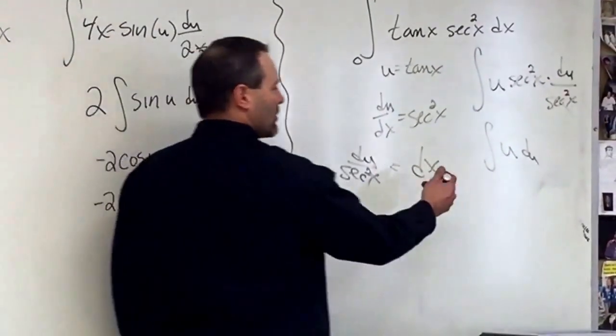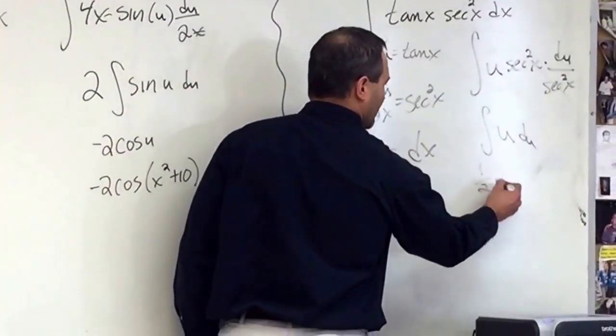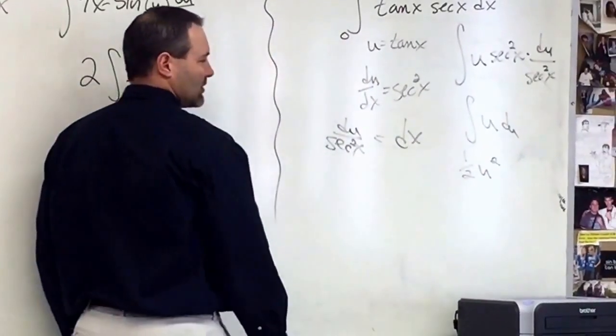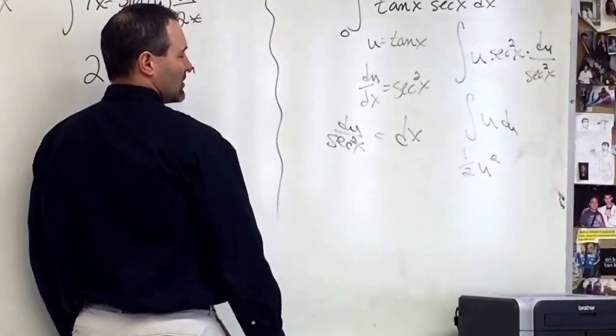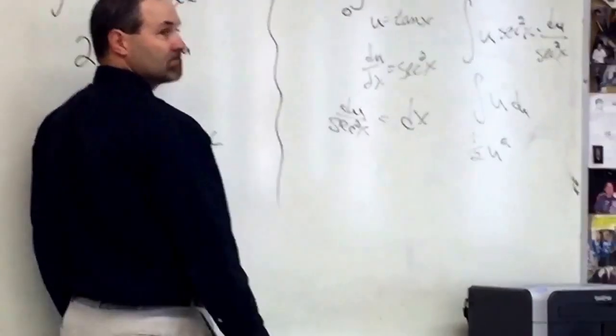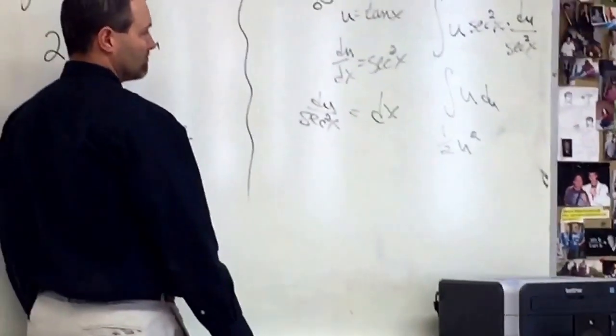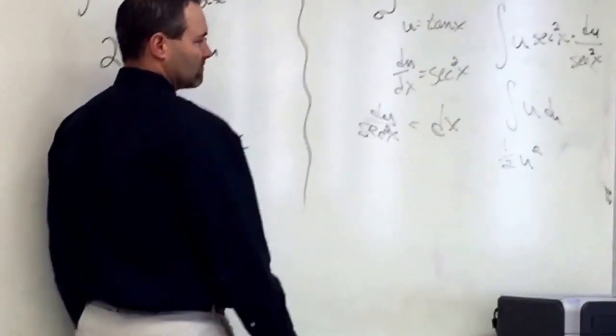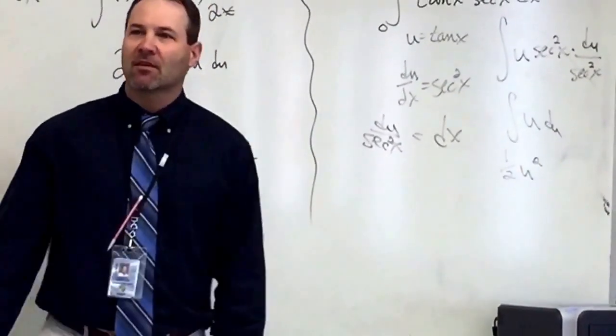So anti-derivative of u is 1 half u squared. Did you do that by changing it into the box?